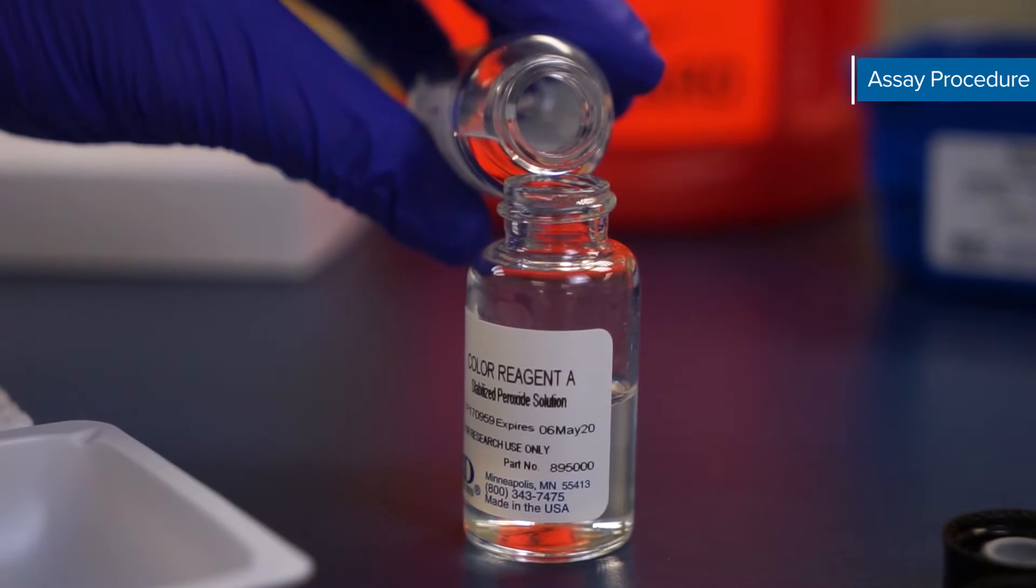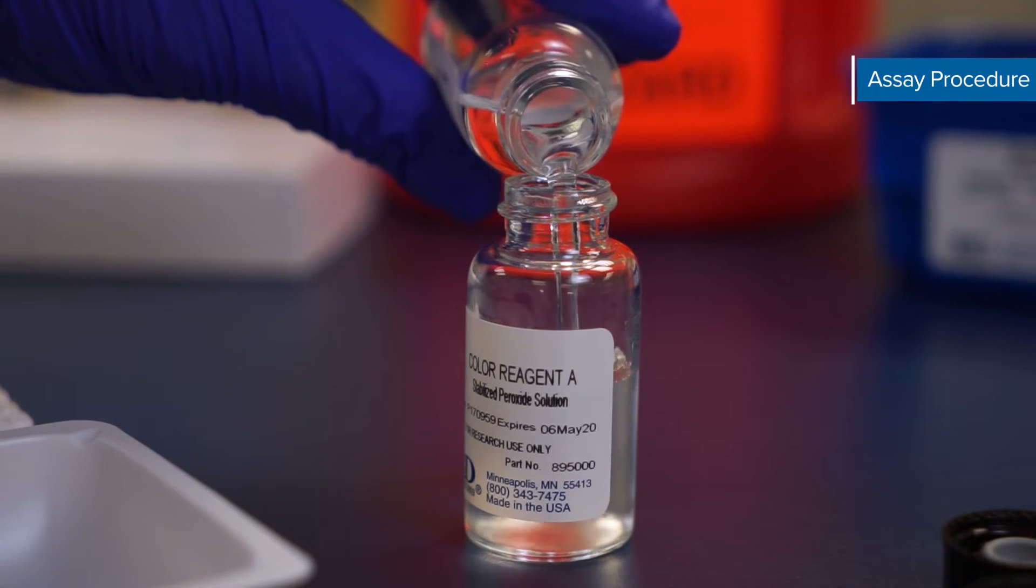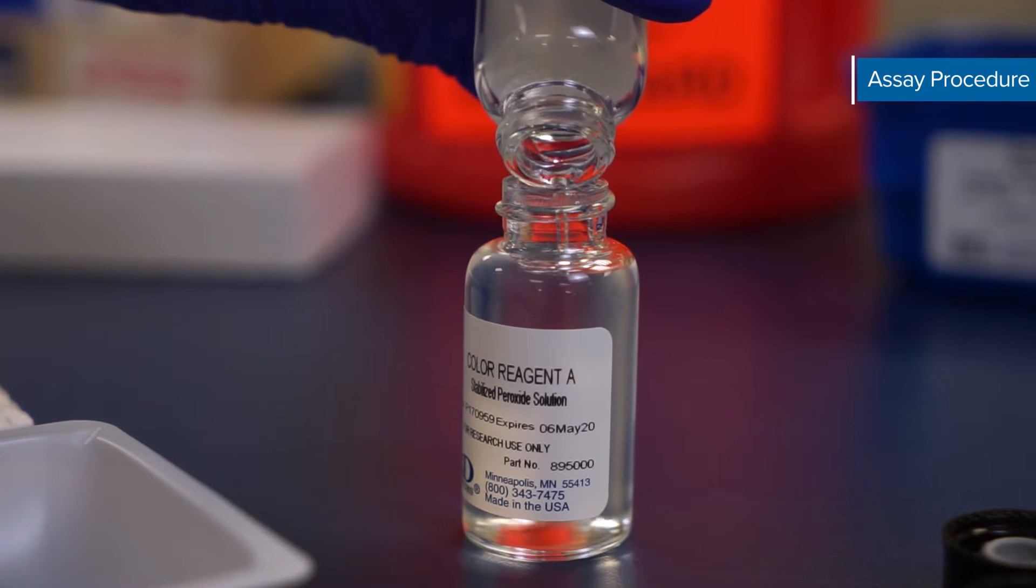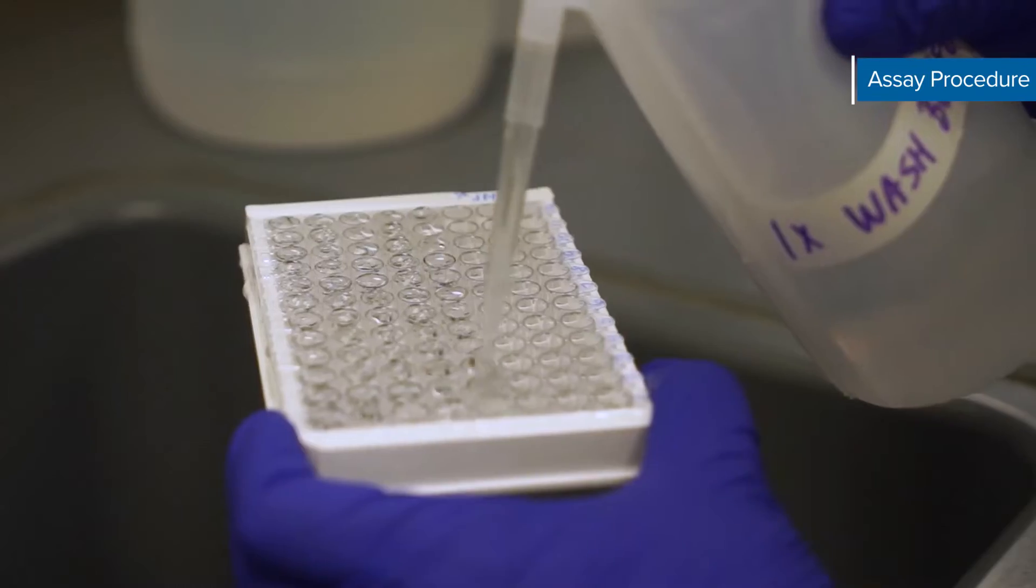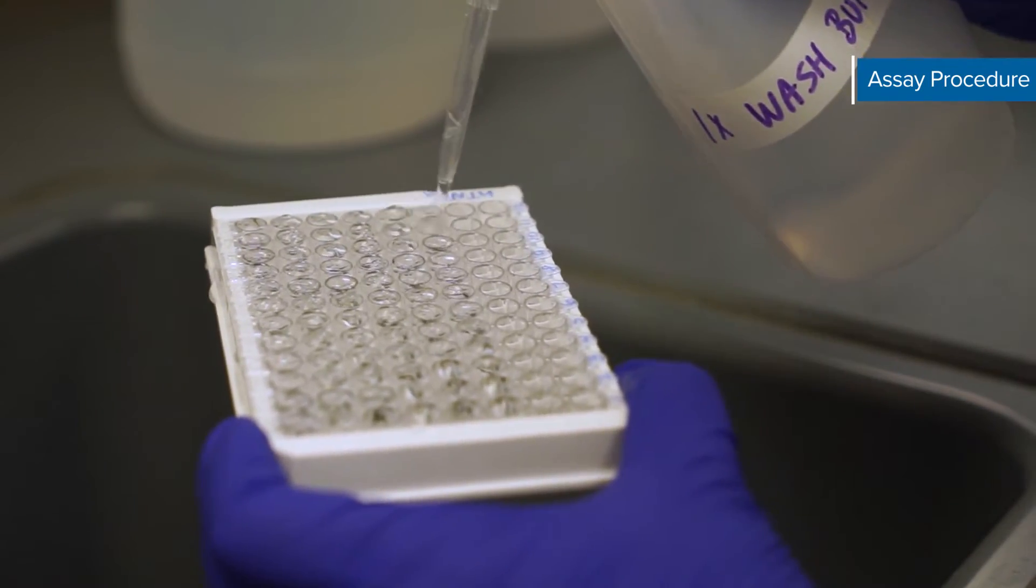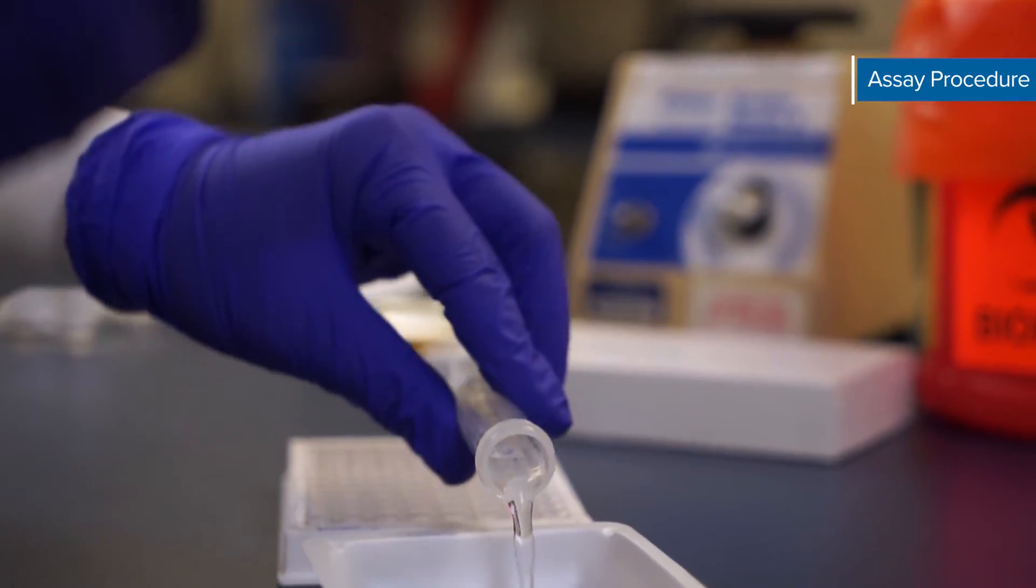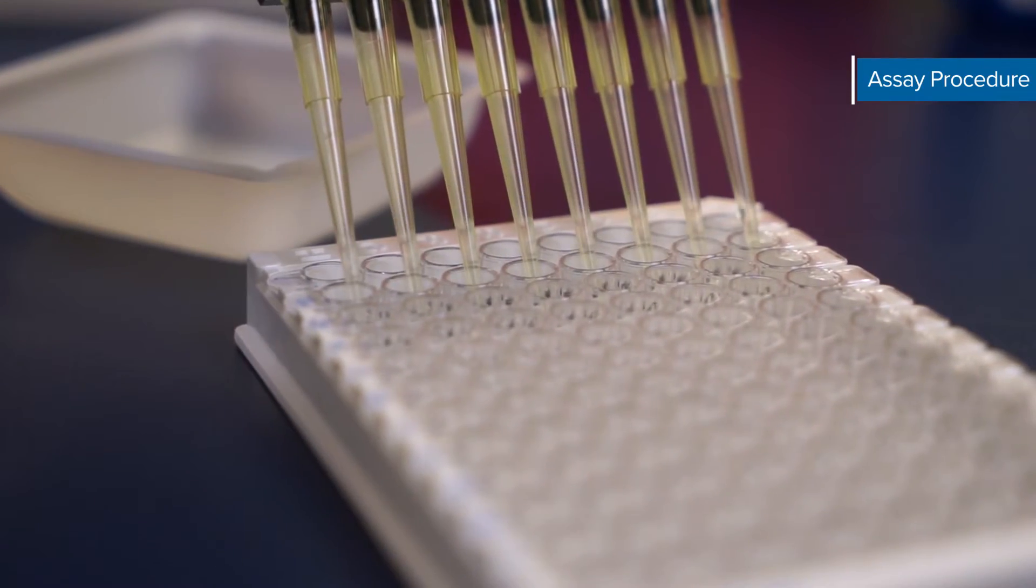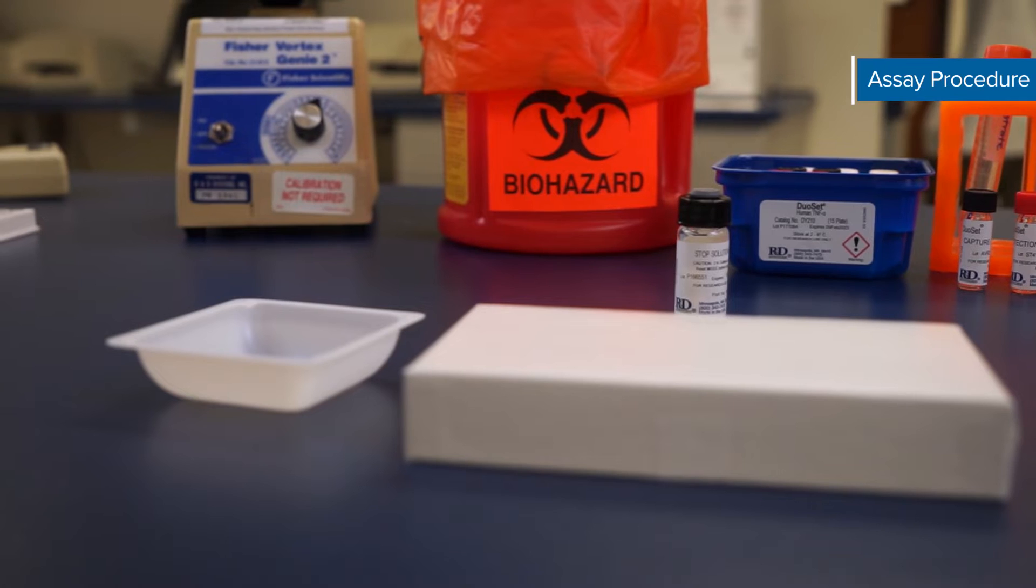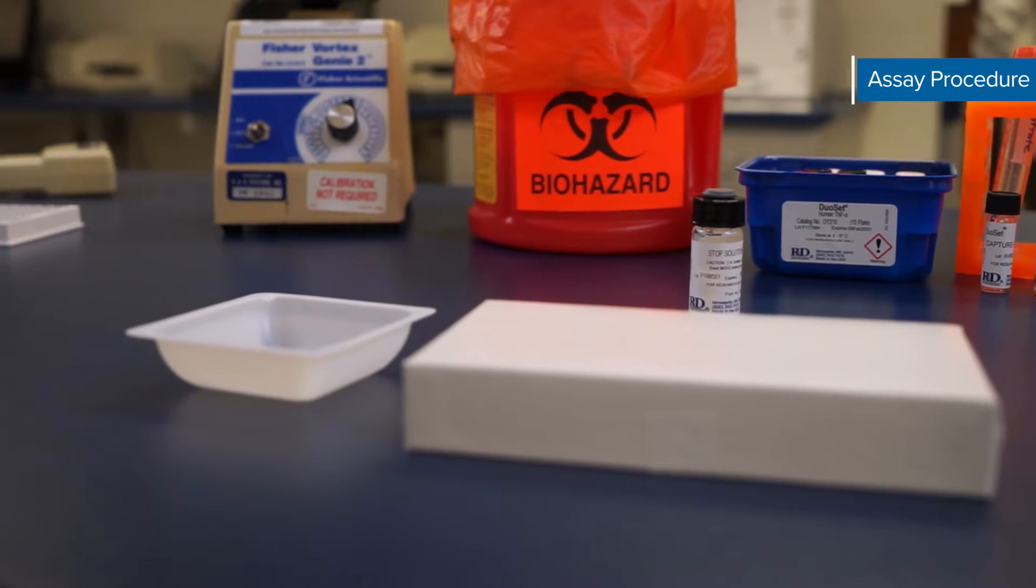In the last five minutes of the streptavidin HRP incubation prepare the substrate solution, a one-to-one mix of hydrogen peroxide and tetramethylbenzidine. Next repeat the wash step. Now add 100 microliters of substrate solution to each well. Incubate for 20 to 30 minutes at room temperature on the benchtop. Avoid placing the plate in direct light.